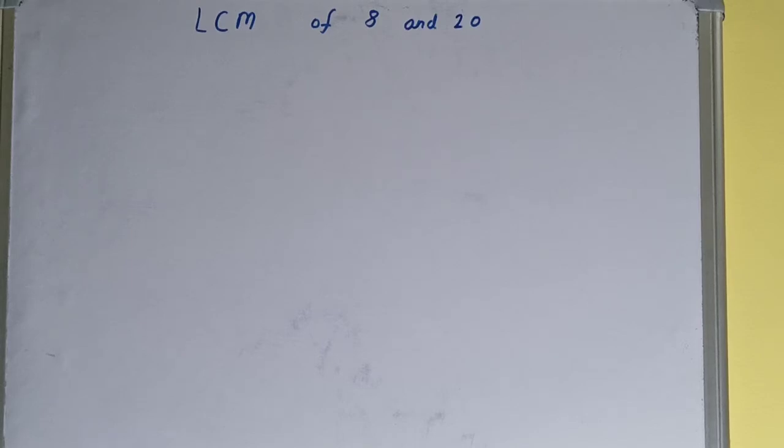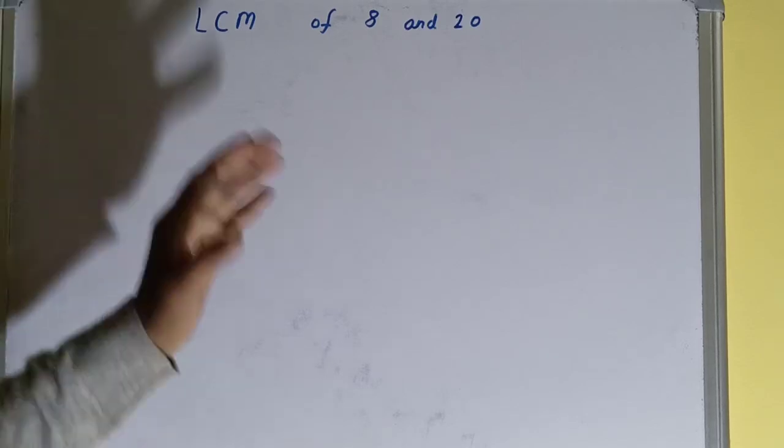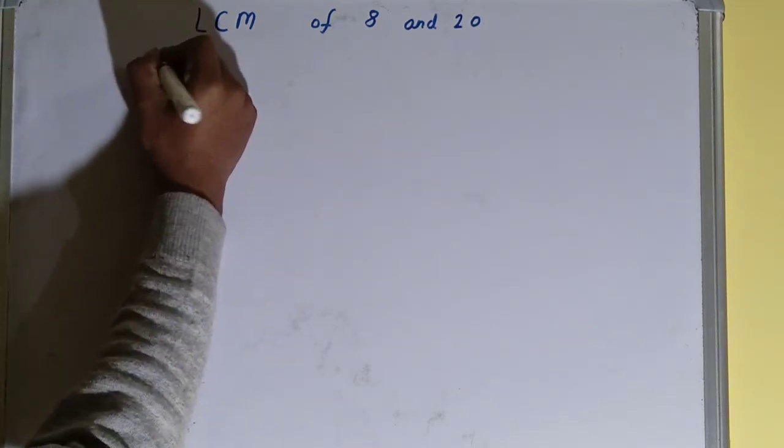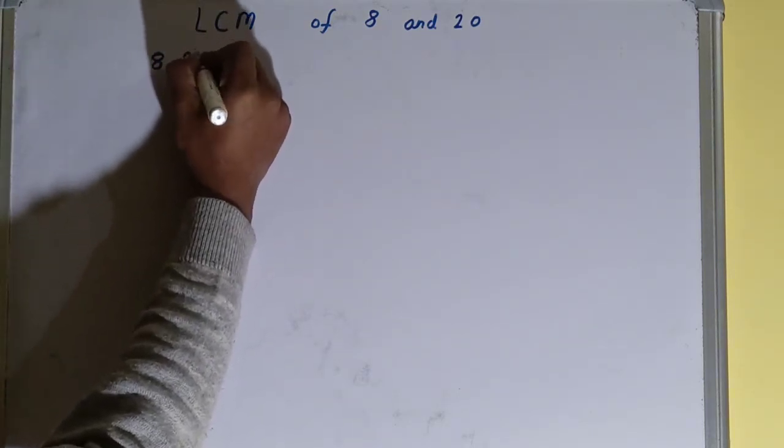Hello friends, and in this video I'll be helping you with the LCM of the numbers 8 and 20. So let's start. To find it out, you need to write both the numbers like this: 8 comma 20.